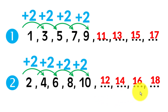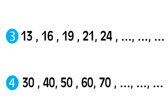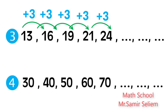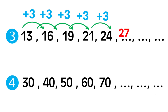Number three: thirteen, sixteen, nineteen. Sixteen minus thirteen equals three, so we add three each time. Sixteen plus three equals nineteen. Twenty-one plus three equals twenty-four. To find the missing, add three to twenty-four: twenty-five, twenty-six, twenty-seven. Twenty-seven plus three equals thirty.